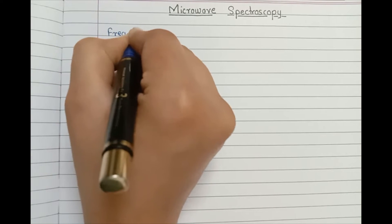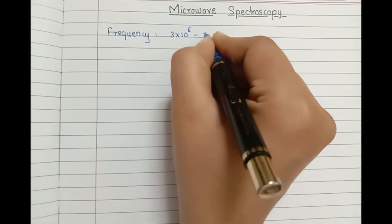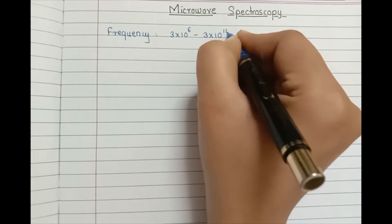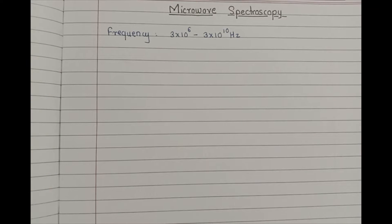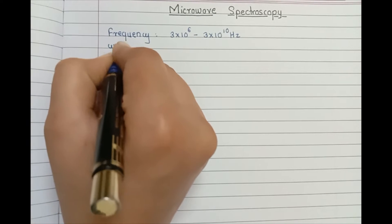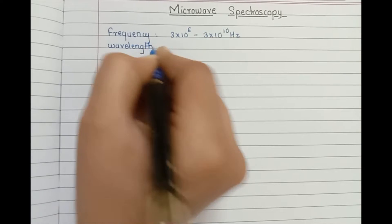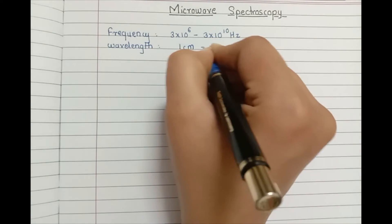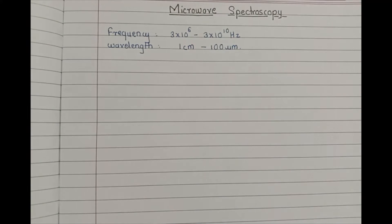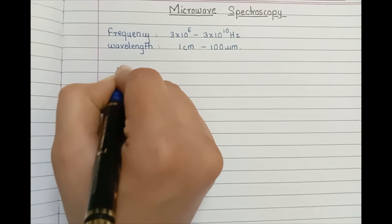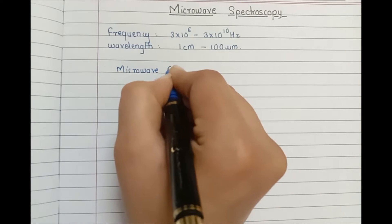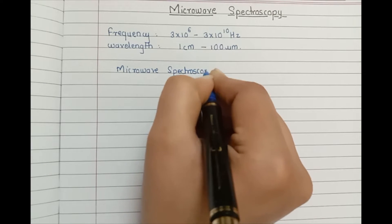We are going to start with the first chapter, that is microwave spectroscopy. Microwave spectroscopy is studied in the region having frequency in the range of 3×10^6 to 3×10^10 Hz. The wavelength ranges from 1 centimeter to 100 micrometer.